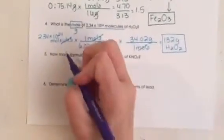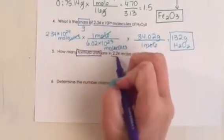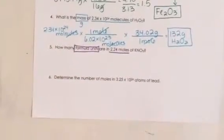Question number five, how many formula units are in 2.24 moles of potassium nitrate?